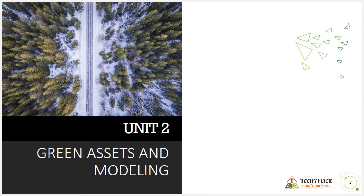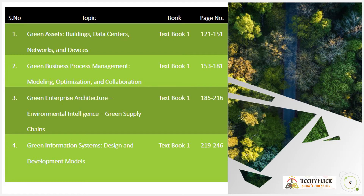Unit two is Green Assets and Modeling, with four topics. First, Green Assets: Buildings, Data Centers, Networks and Devices, from textbook one, pages 121 to 151. Second, Green Business Process Management: Modeling, Optimization and Collaboration, from textbook one, pages 153 to 181. Third, Green Enterprise Architecture, Environmental Intelligence, and Green Supply Chains, from textbook one, pages 185 to 216. Fourth, Green Information Systems: Design and Development Models, from textbook one, pages 219 to 246.